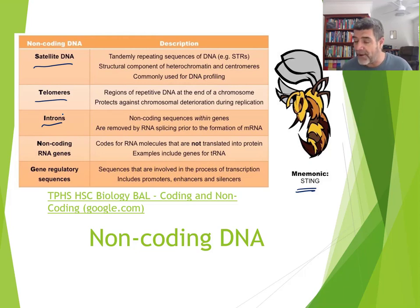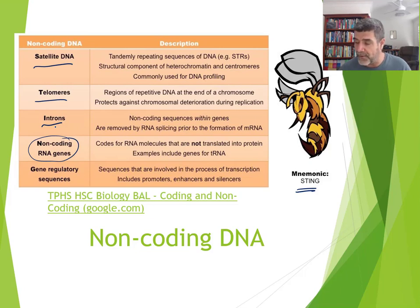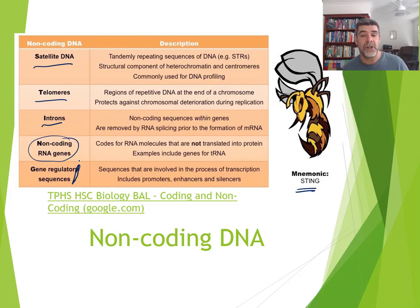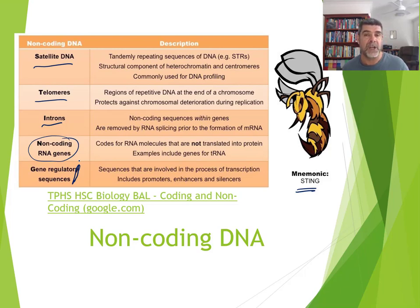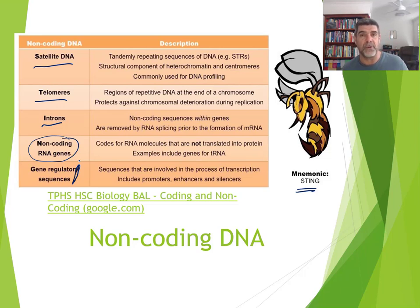The N in STING stands for non-coding RNA genes, a fourth group of non-coding DNA regions. G stands for gene regulatory sequences involved in stimulating transcription — things like promoters, enhancers, silencers, and operons. There's a range of different types of non-coding DNA, all of which, if they suffer mutation, can have differing kinds of impacts on the cell and on the organism.